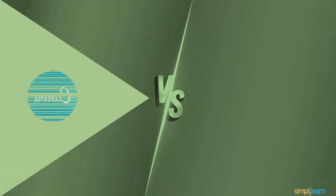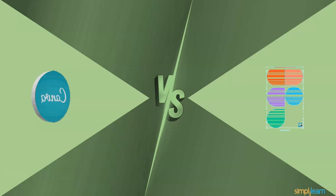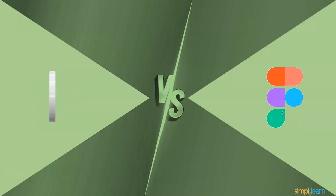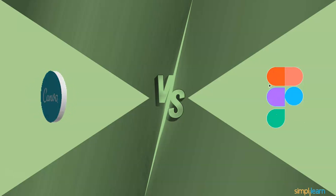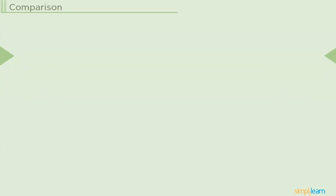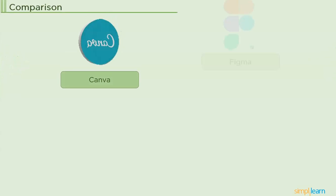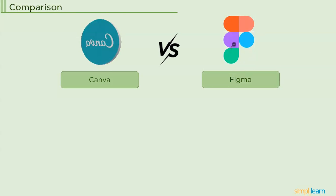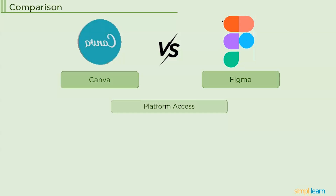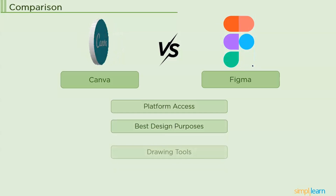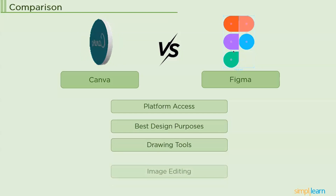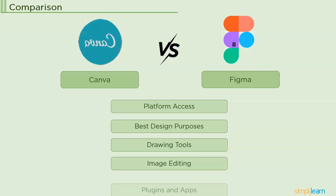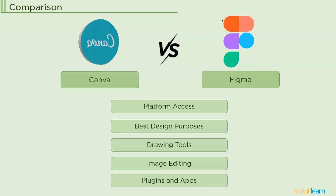In many industries, visuals are essential. We propose ideas for improved communications, whether well-displayed photographs or buttons. Canva and Figma provide equal access in terms of use, price, and third-party plugins or applications, but there are also many distinctions. The basic comparison covers platform access, best design purposes, drawing tools, image editing, and plugins and apps.